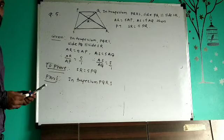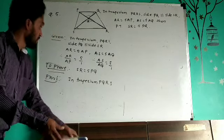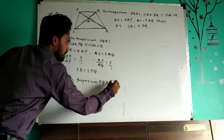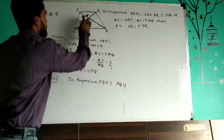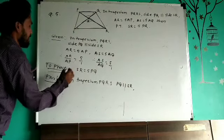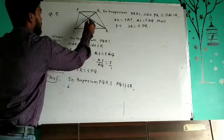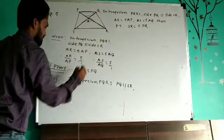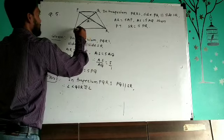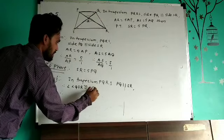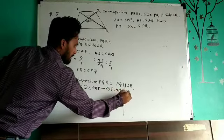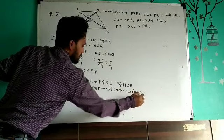Directly in trapezium PQRS, PQ parallel to SR. Therefore angle QSR is congruent to angle SQP. The reason is alternate angles — because PQ is parallel to SR and QS is the transversal, these are alternate angles.